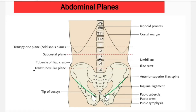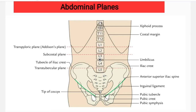The next plane is the trans-tubercular plane, also known as the inter-tubercular plane. To locate it, we identify the tubercle of the iliac crest, which lies five centimeters posterior to the anterior superior iliac spine. Posteriorly, this plane passes through the upper border of the L5 vertebra.